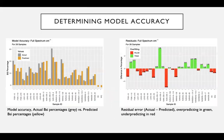To determine model accuracy, on the left you can see in gray the actual percentages of BSI, and in yellow the predicted percentages our model has predicted. On the right is the residual error: green indicates where the model is over-predicting, and red indicates where the model is under-predicting. For each sample it's not perfect — there are some samples with very small residual errors, which is exciting, but there are also samples with large over-fitting and under-fitting.